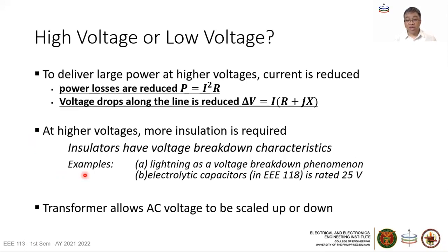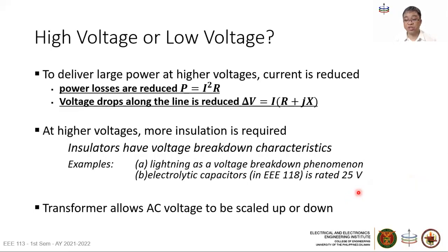Another illustration of voltage breakdown is lightning, and capacitors rated at 25 volts — if you use those capacitors beyond 25 volts, they will pop and burn. The key to all this are transformers, which allow us to scale voltages up and down as needed.